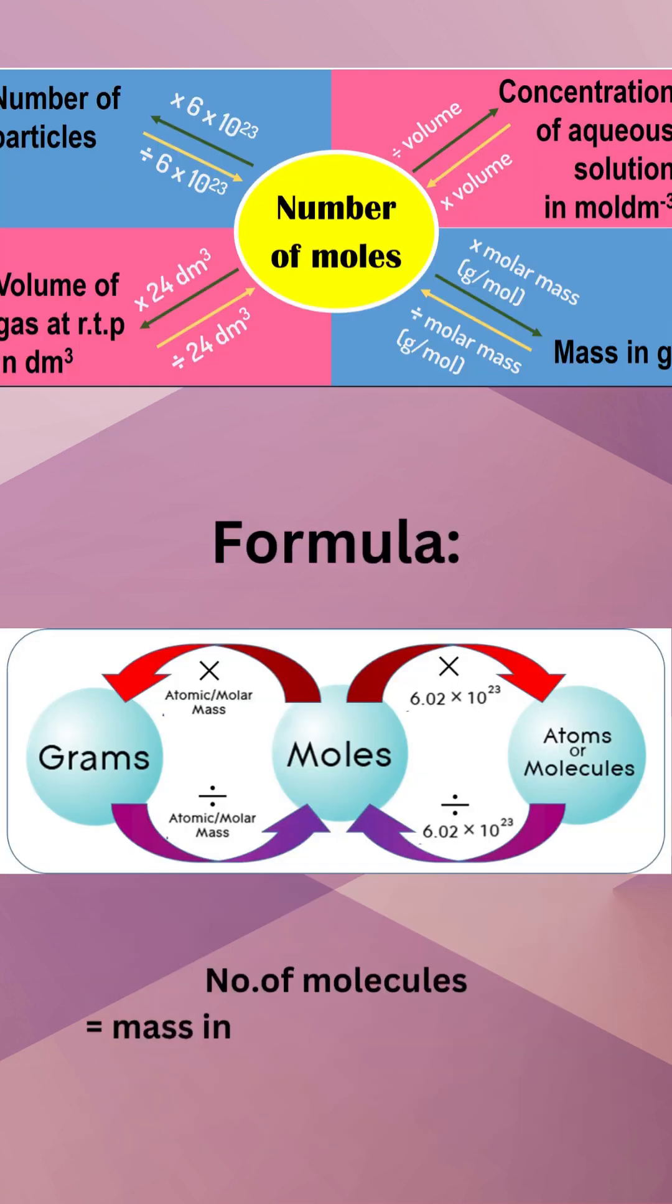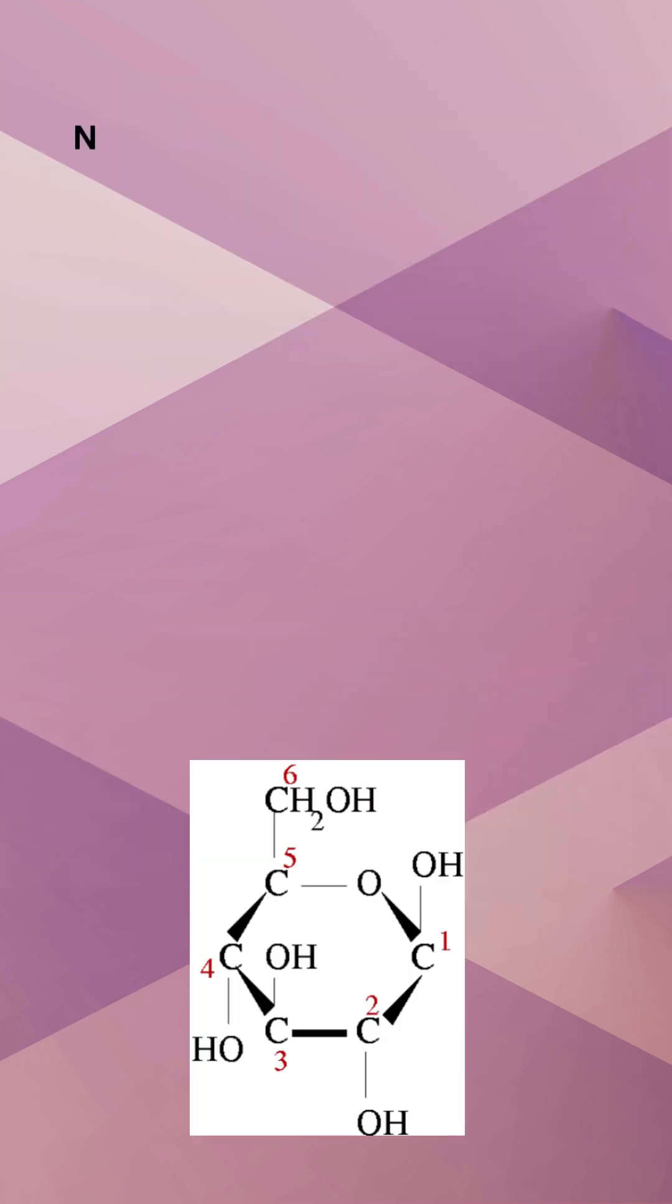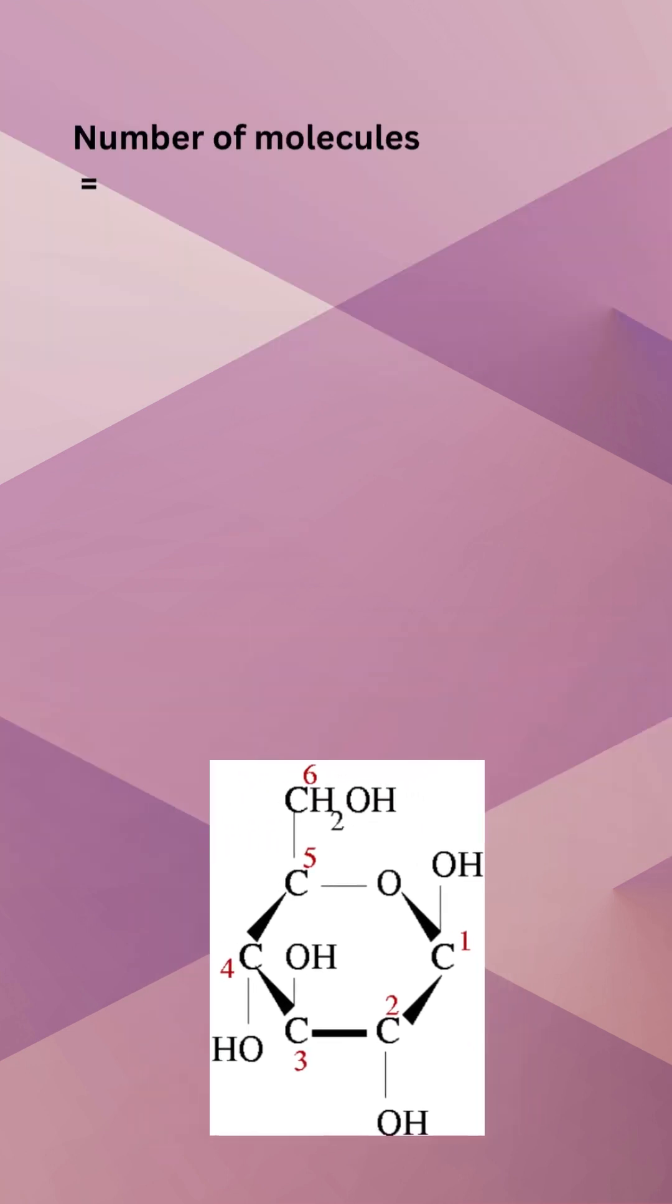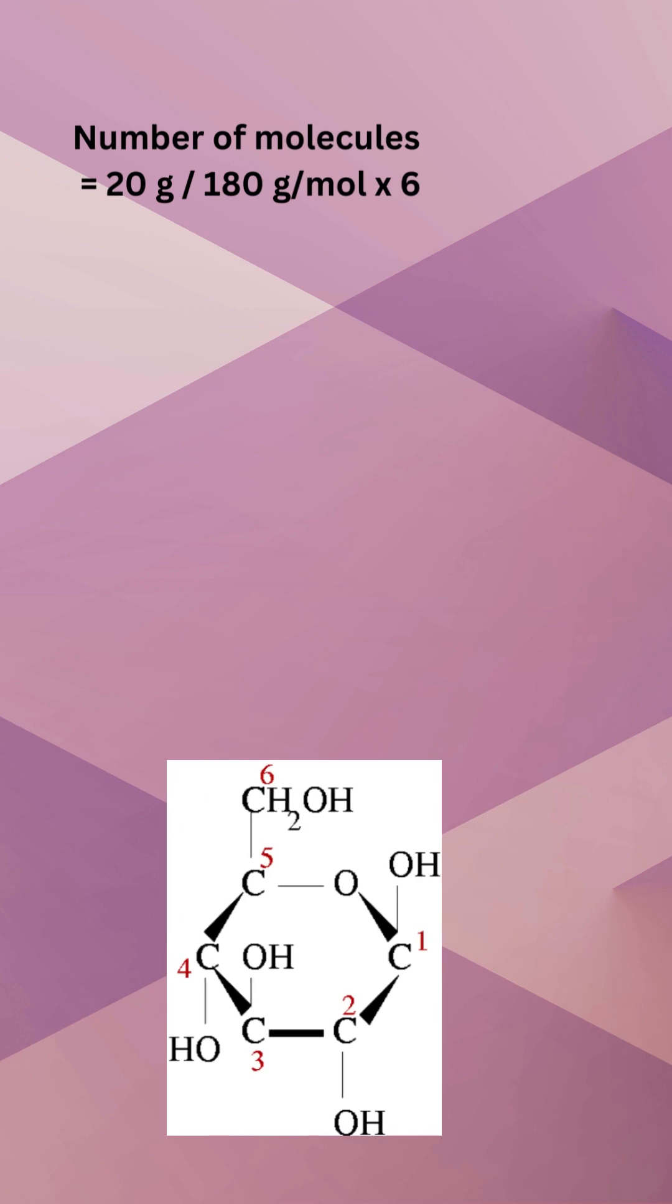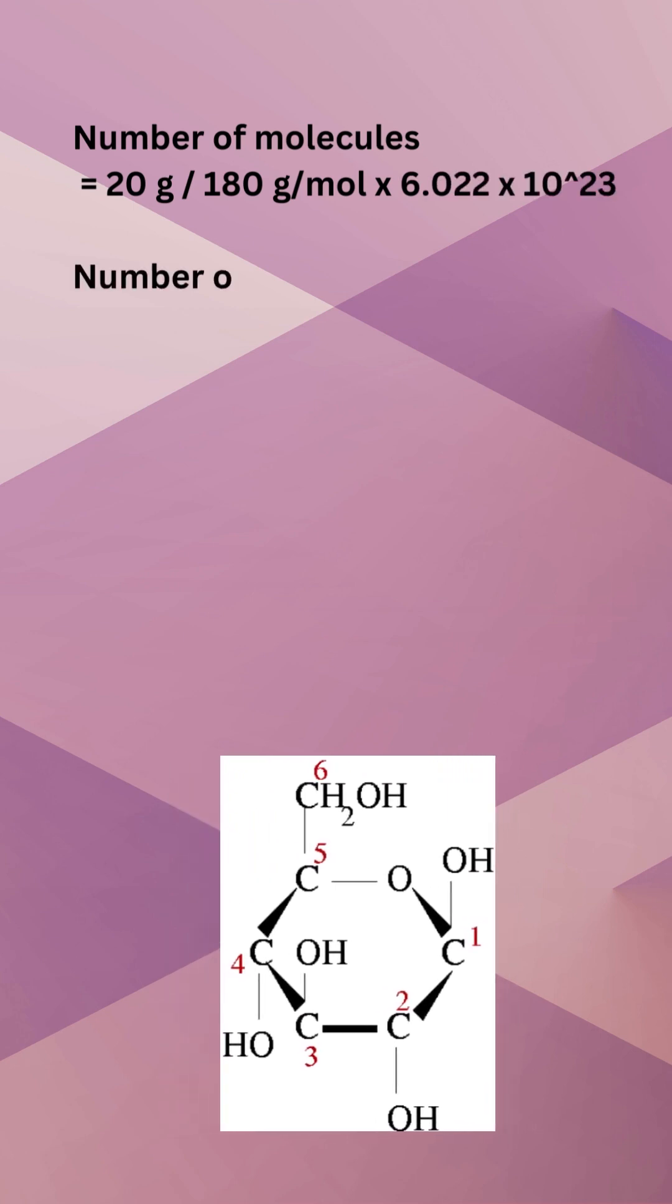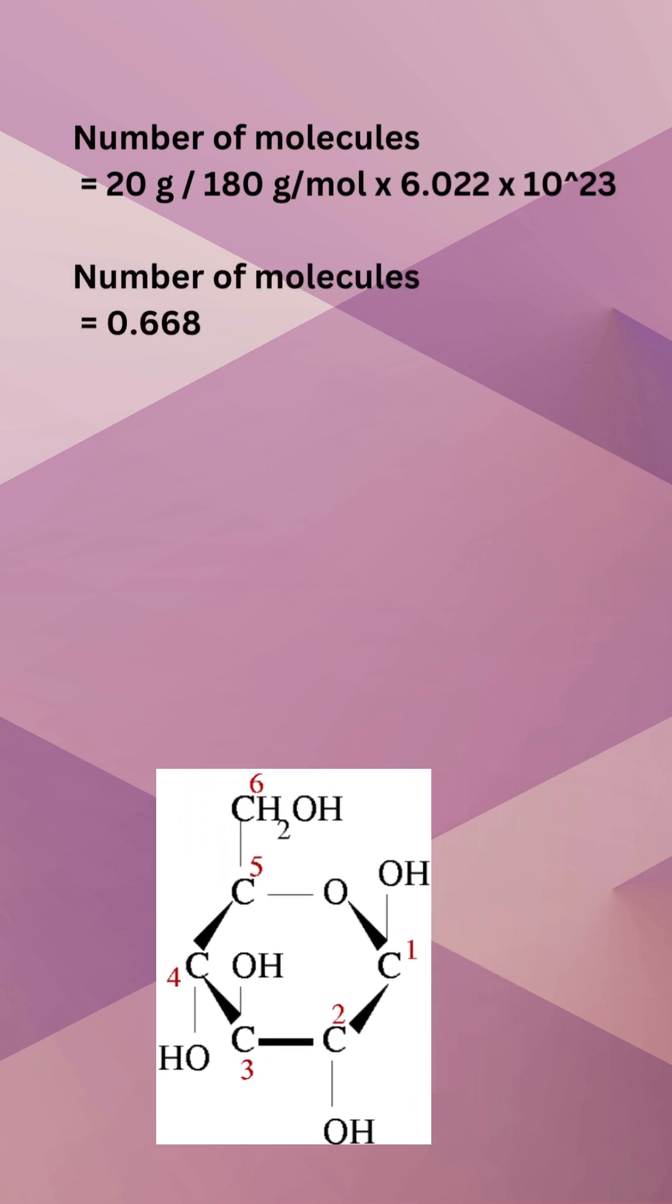Number of molecules equals mass in grams divided by molar mass into Na. Number of molecules equals 20 divide by 180 into 6.022 into 10 to the power of 23, equals 0.668 by 10 to the power of 23 molecules of glucose.